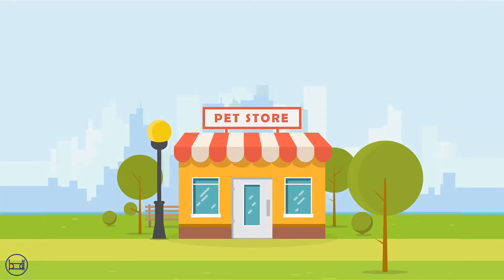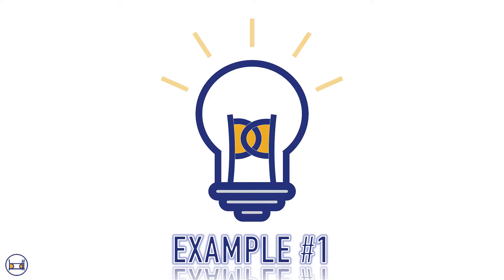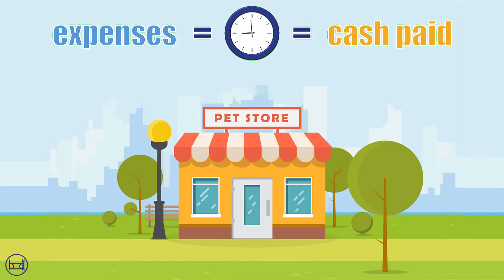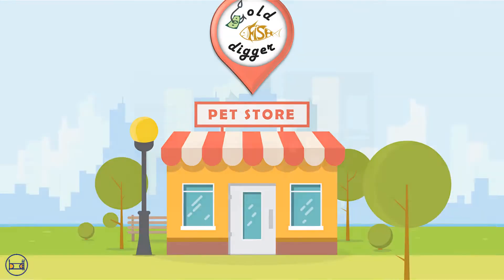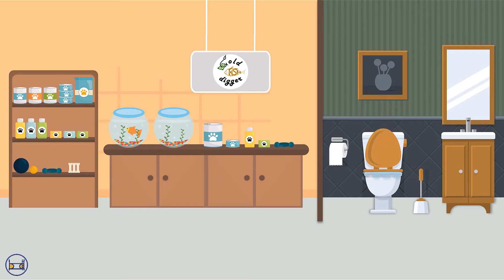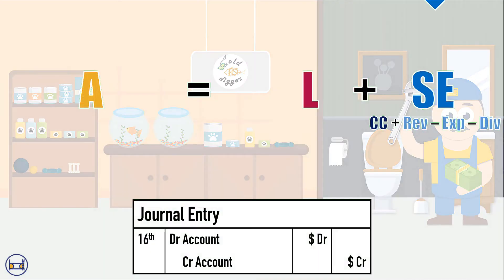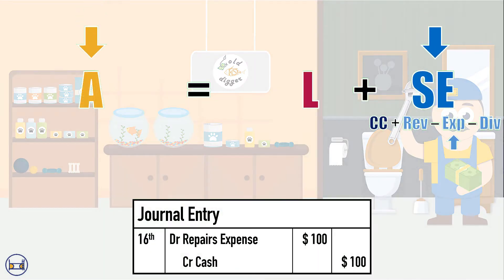Like revenues, expenses can occur in one of three ways. Number one, the expense and the cash payment can happen at the same time. For instance, a reckless employee at Goldfish Digger Pet Shop tried flushing a fish down the toilet, causing a clog. We would call a plumber and pay him $100 when he finished the job. So we debit repairs expense for $100 and credit cash for $100.